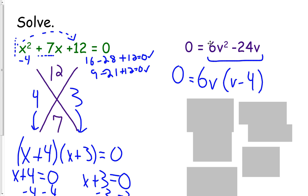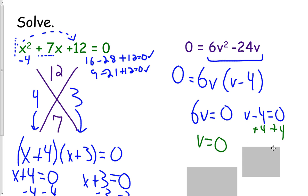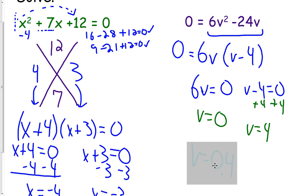And when we take 6v out of 6v², we have v left over. Divide 24 by 6. We get 4. Divide by v. And the v's cancel. So we're left with 6v(v-4). So set each piece equal to 0. 6v = 0. v-4 = 0. We'll get v equals 0. And we'll get plus 4 to both sides. v equals 4. So our final answer will be 0 and 4.